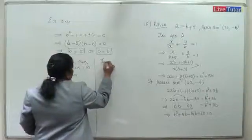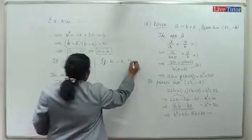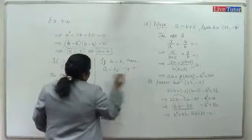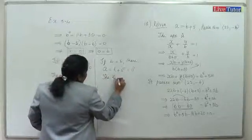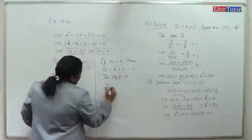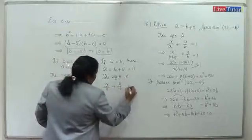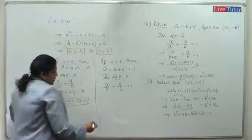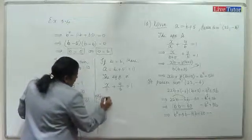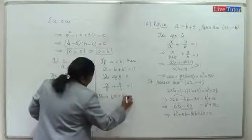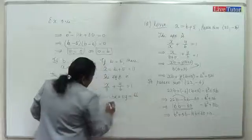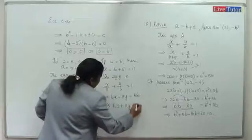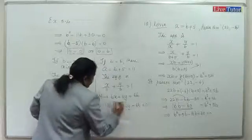When b equals 6, a equals 6 plus 5 equals 11. The equation is x by 11 plus y by 6 equals 1. Multiplying by 66: 6x plus 11y equals 66, that is 6x plus 11y minus 66 equal to 0. This gives two equations.